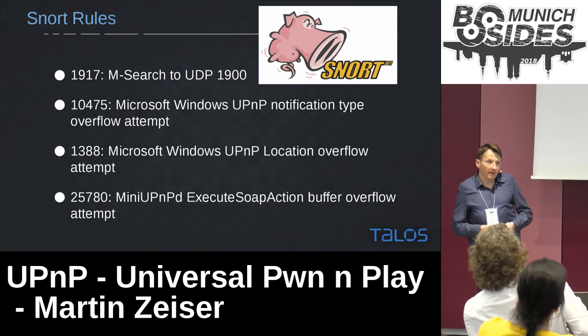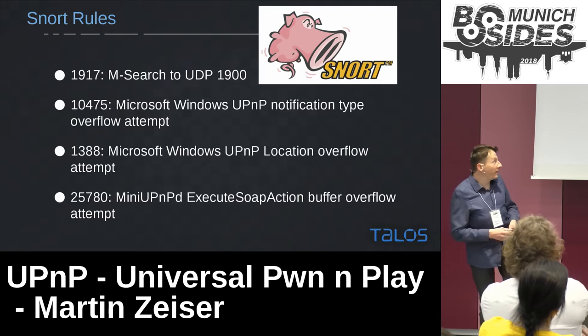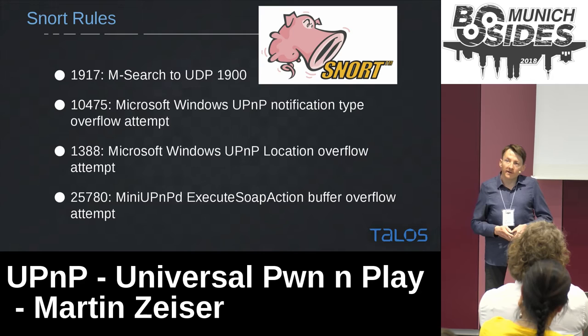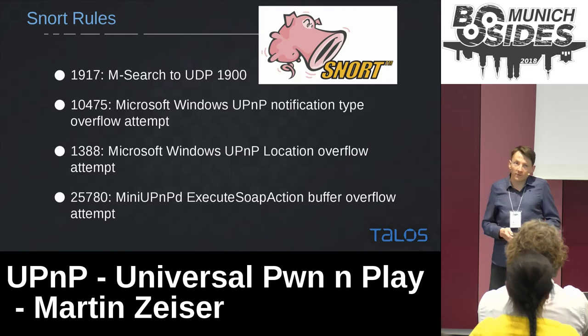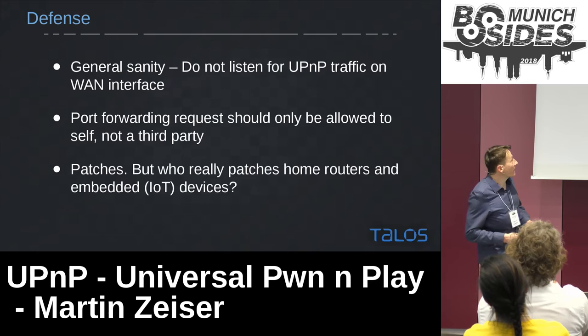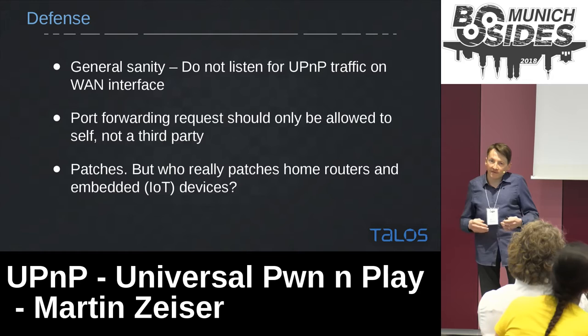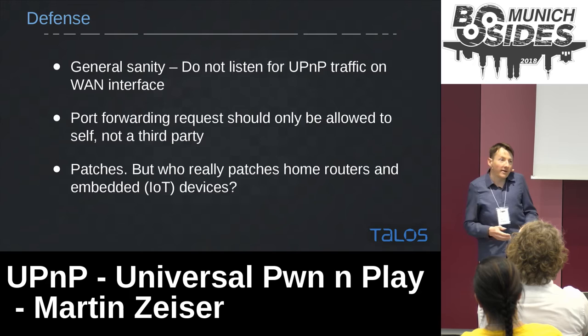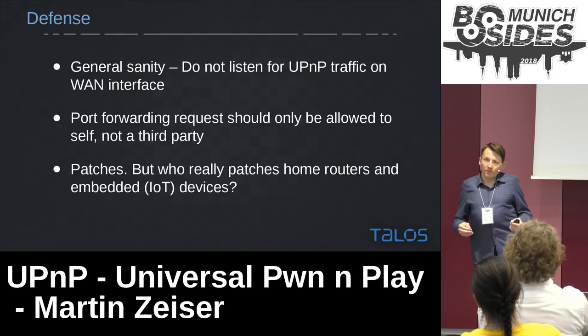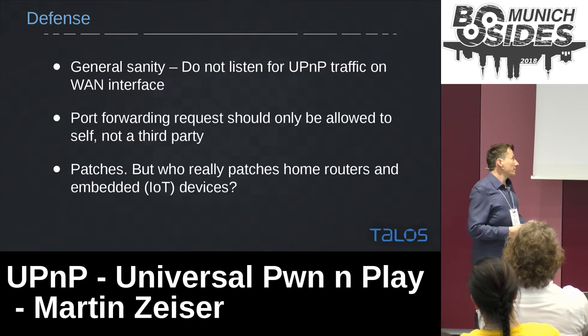Defense: patching obviously, or just removing UPnP if possible — that would be even better. IDS/IPS rules will help mostly, but that's not my preferred solution. If you can, just disable it and remove it — it's just not a good idea to run. General sanity: no one needs to run UPnP on an external interface to be reachable over the internet. Same goes for port forwarding requests from the outside to the inside — that should not even be possible, yet millions of devices will happily do it.